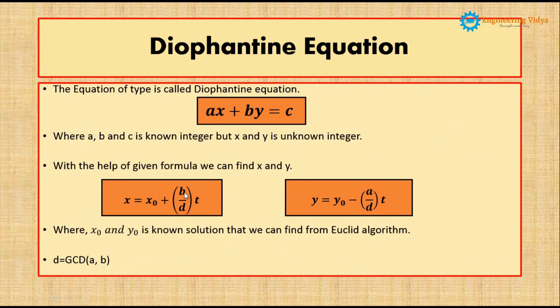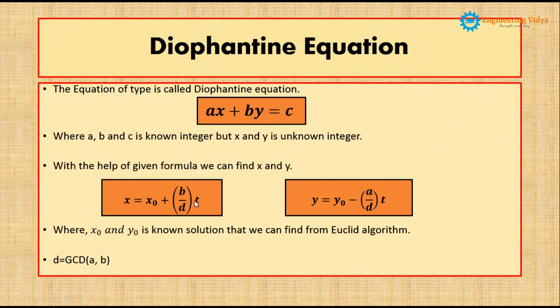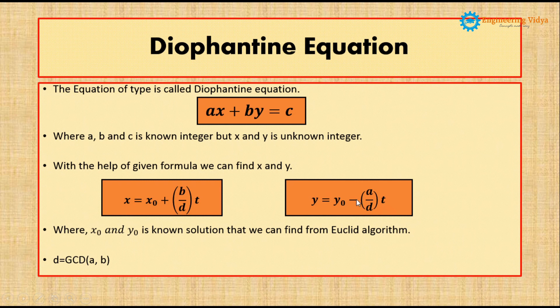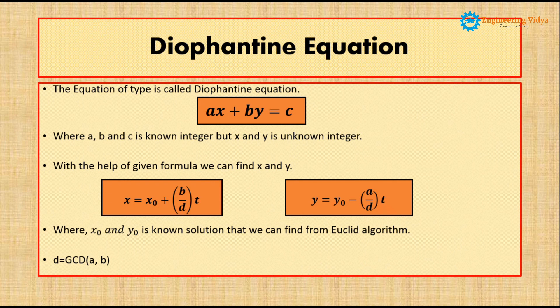We will divide b by d, and whatever result comes will be multiplied by t, where t is any integer. After adding x₀, we get the value of x. A similar case applies to y. This is all about the theoretical part of the Diophantine equation, and in the coming lecture we will start with the solution part. Thank you.